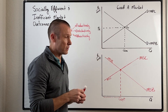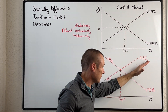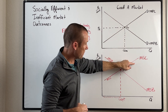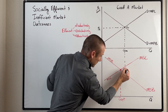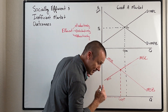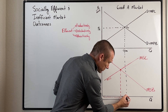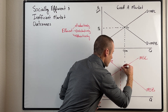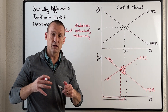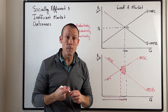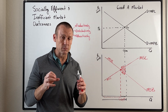Now, with a negative externality from production, the marginal private cost curve lies below the marginal social cost curve. The market left alone will produce beyond Qopt — all the way to the market equilibrium — which is socially inefficient. We produce goods we don't want to produce because for those units, the marginal social cost exceeds the marginal social benefit. That area is deadweight loss — the amount by which we fall short of maximum social surplus.